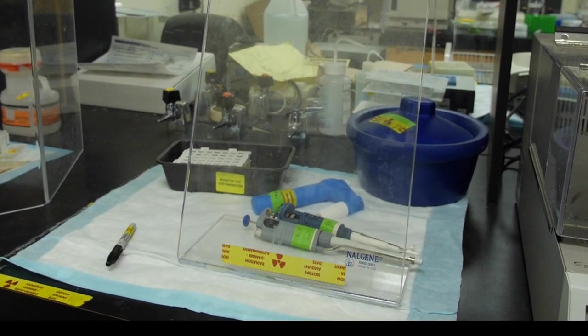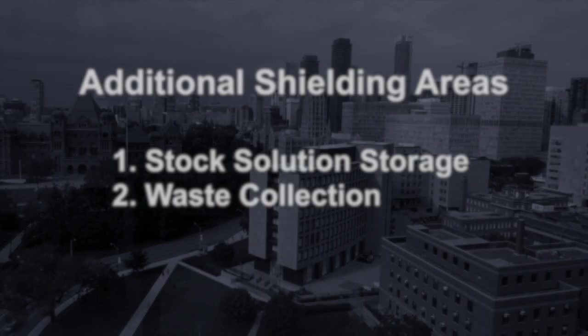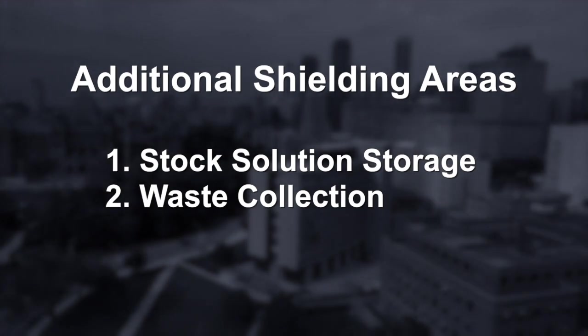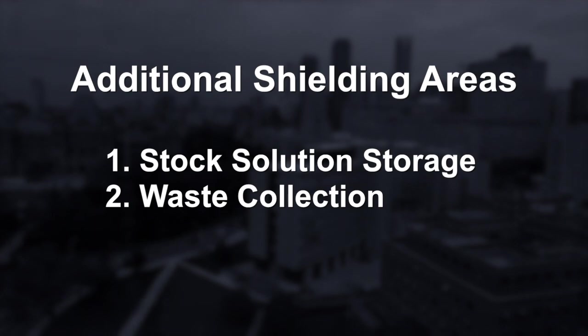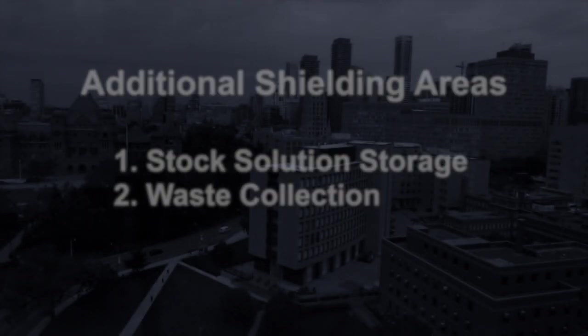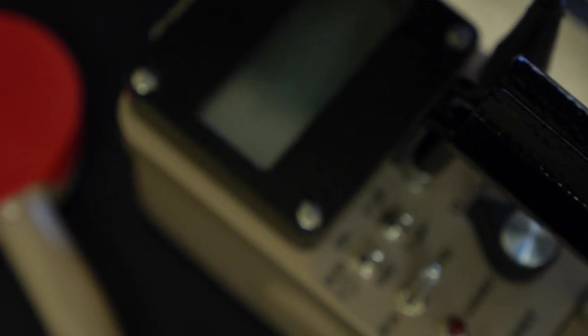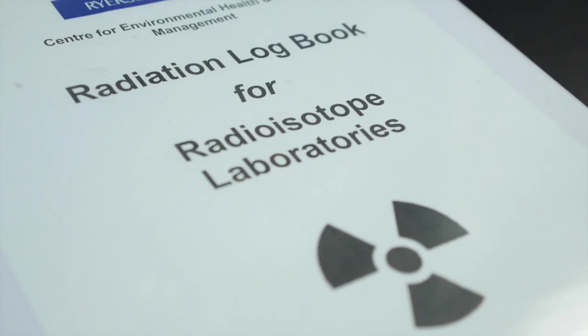Areas that often require more shielding are stock solution storage and waste collection areas. As a result, make sure you have enough shielding in these locations. You can ensure this by checking with a monitor to ensure the radiation level outside the shielding is at par with background levels.